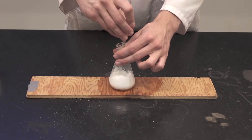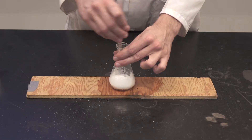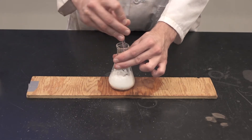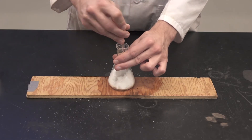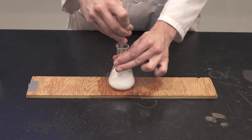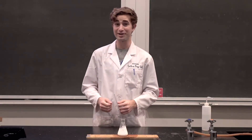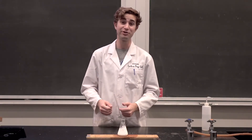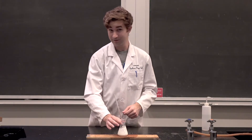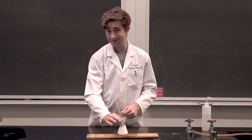When you mix barium hydroxide octahydrate with ammonium chloride, they clump up and form a liquid slurry. Since this reaction requires energy, it'll take energy from the water touching the flask, freezing it.